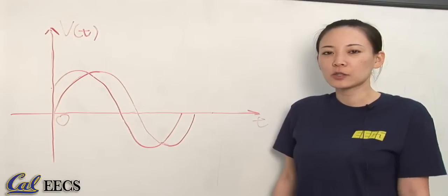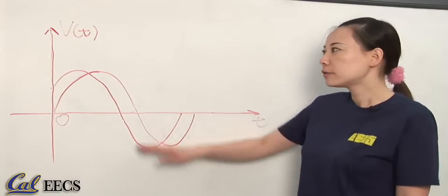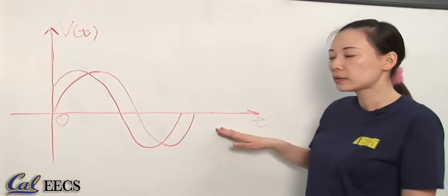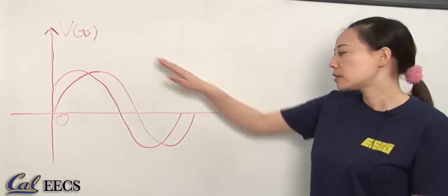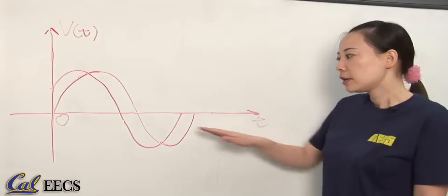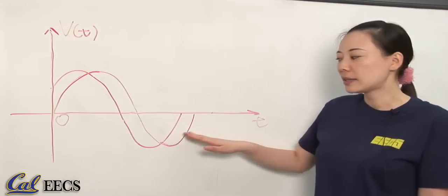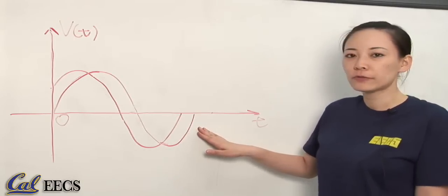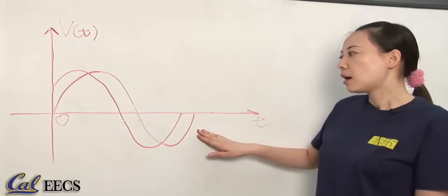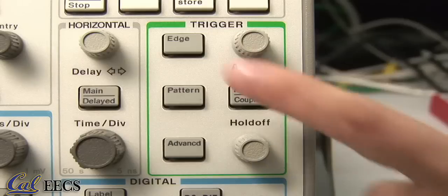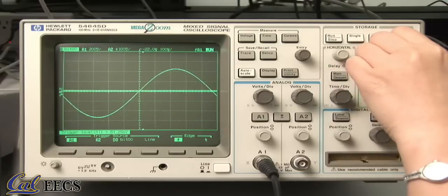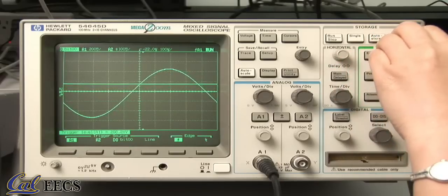Now comes the trickiest part, triggering. We've got vertical signals and horizontal sweep. That's what's needed for a graph of voltage versus time. But if the horizontal sweep doesn't catch the input signal at the same point in its waveform each time, the display will be a mess. The trigger circuitry lets you select a channel, a level and slope on the waveform at which to begin the sweep.